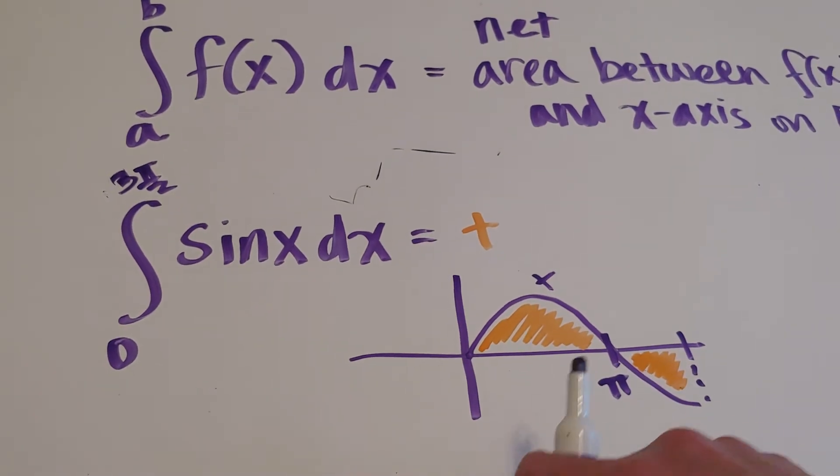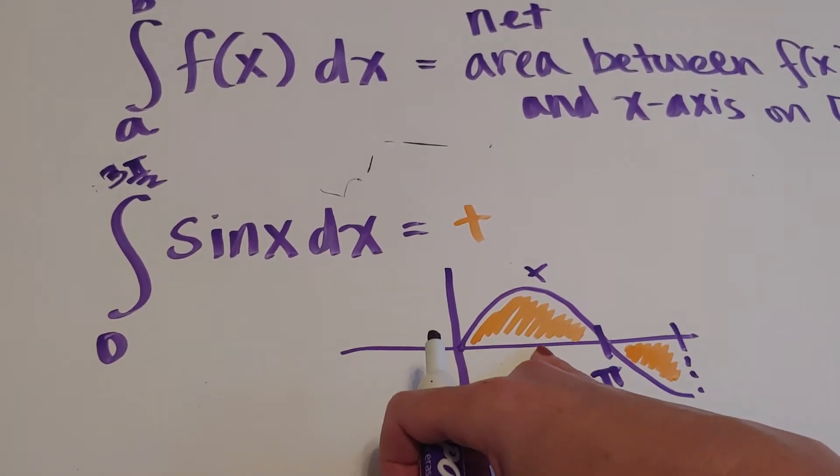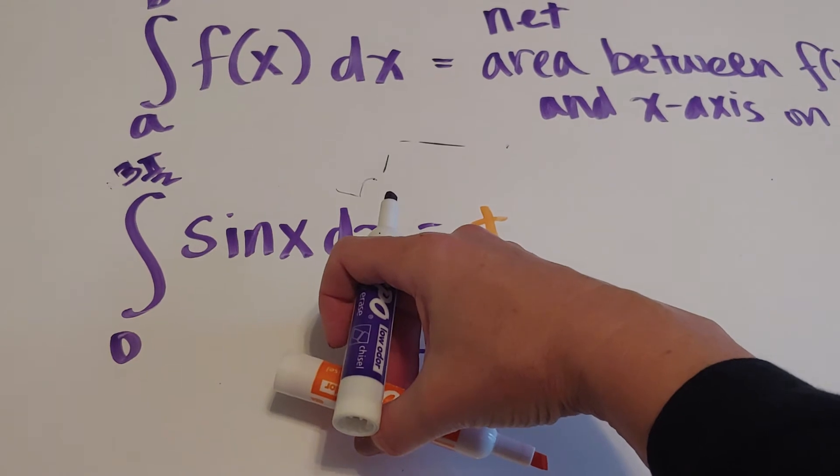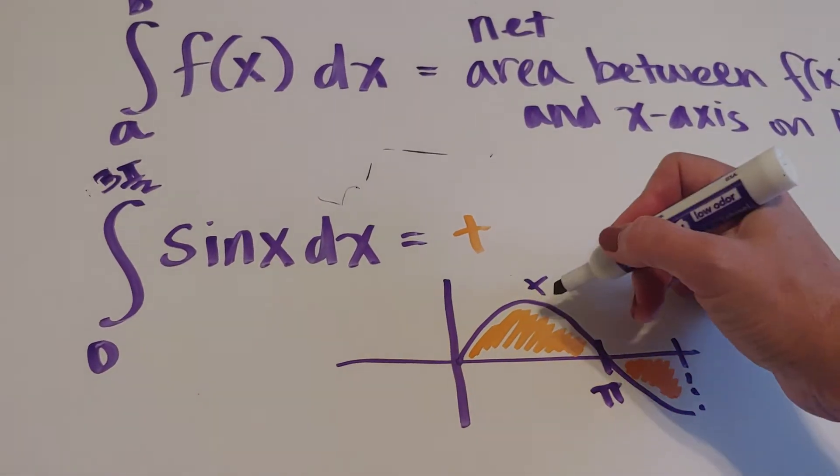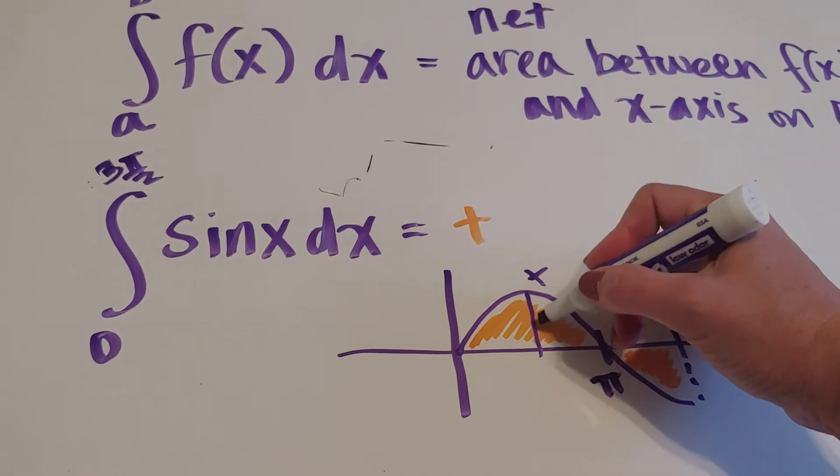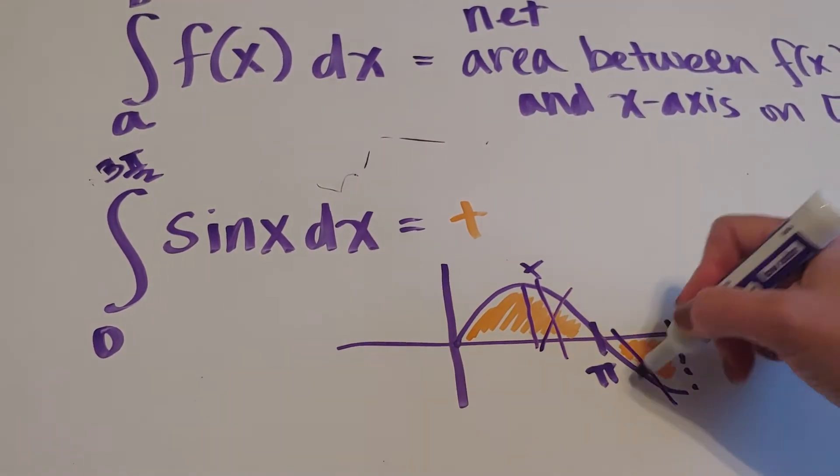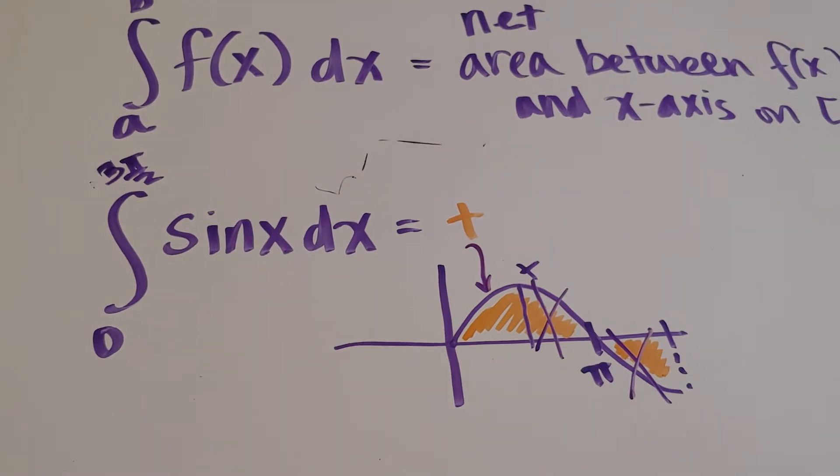So in this instance, because the positive area is larger, our answer would be positive, but it's not representing just this. It actually would be representing, if you think about it, half would cancel. So our answer would actually just be that, which is the net.